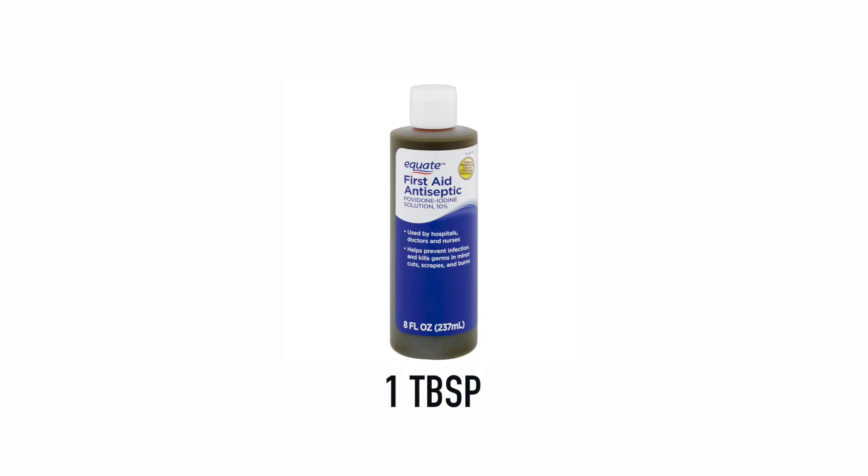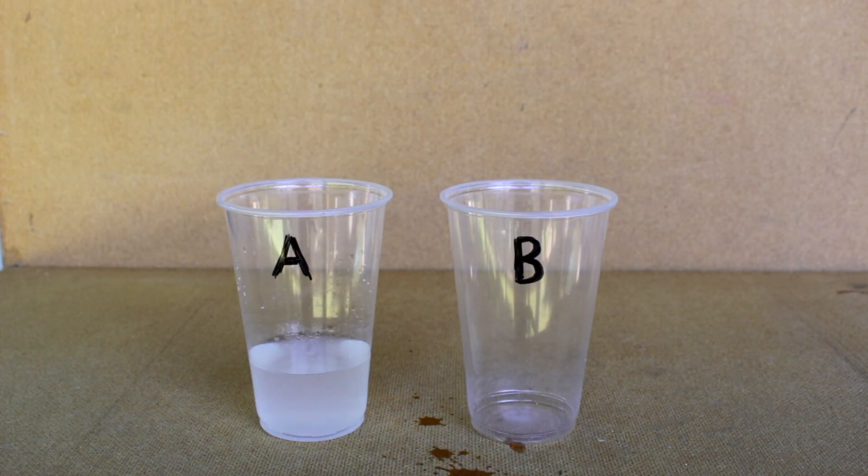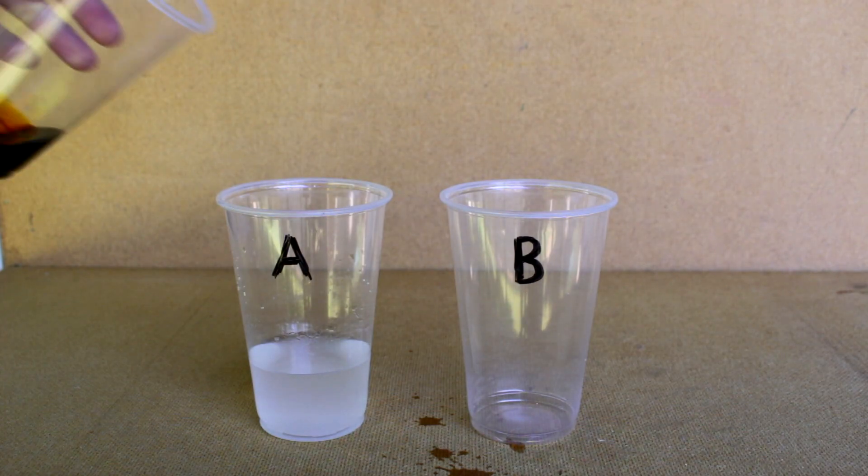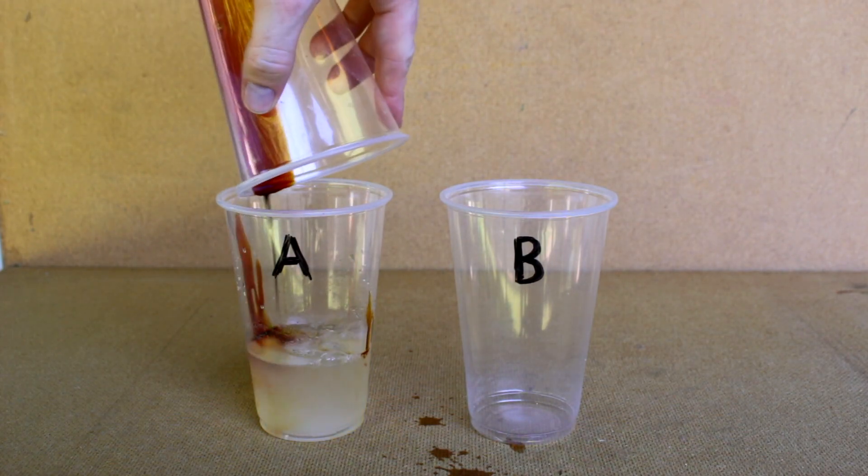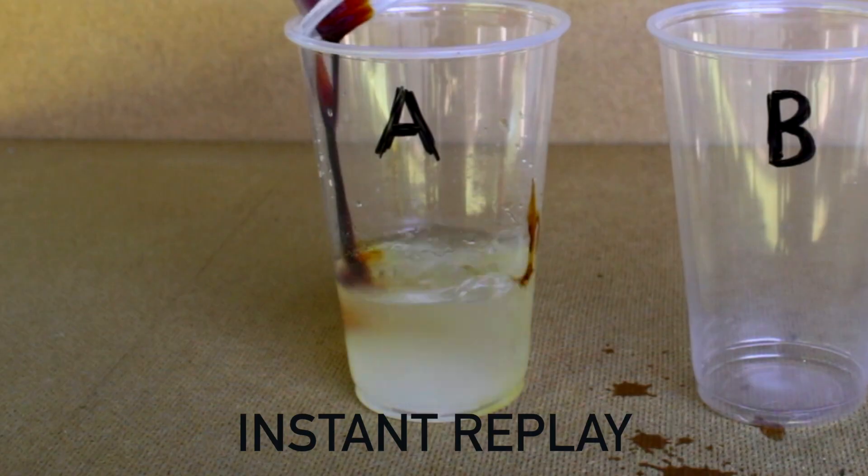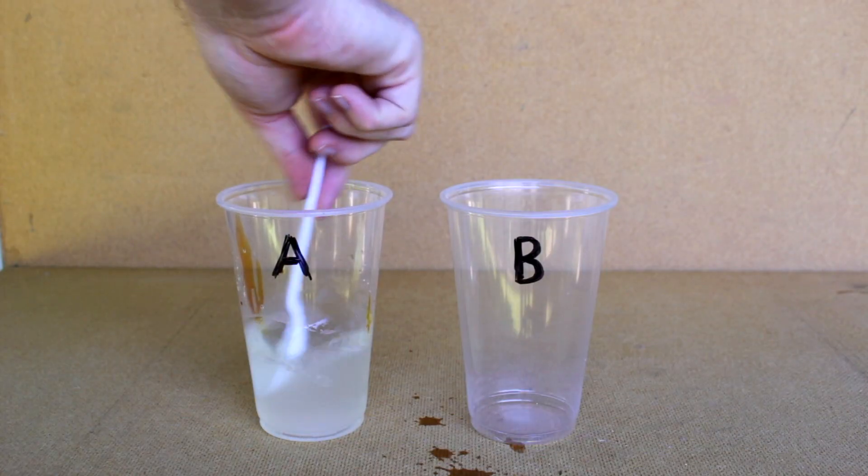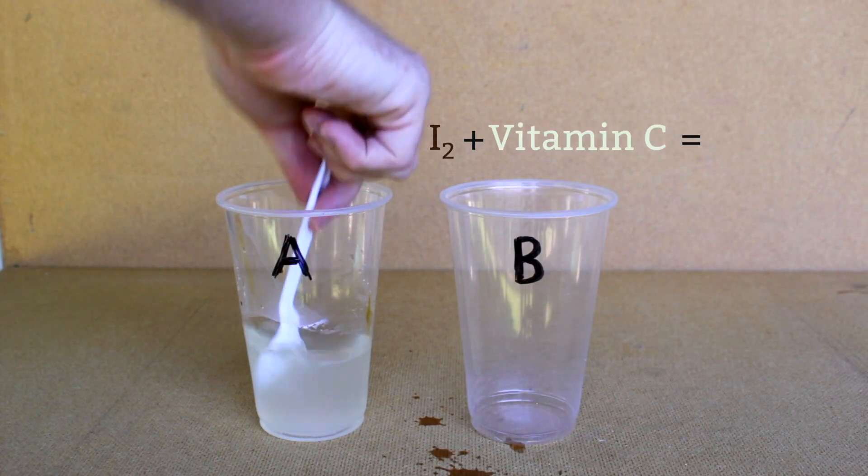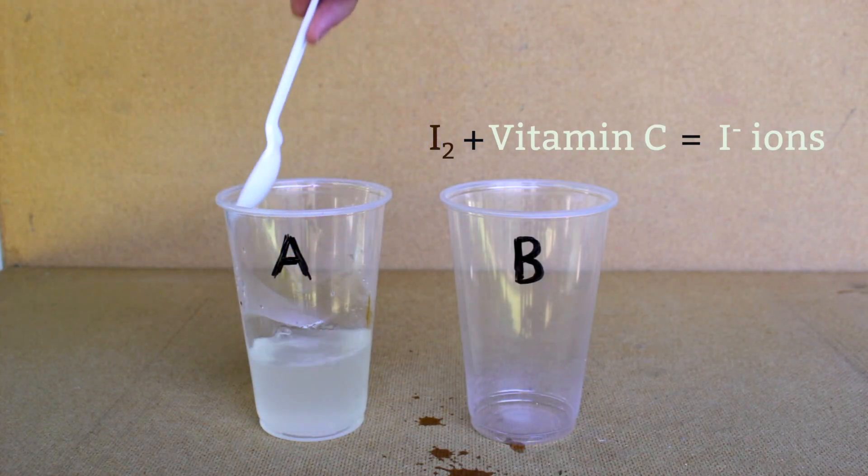Next, add 1 tablespoon iodine, but be careful, it stains. Iodine can be found in the first aid section of most big stores and is brown to begin with, but where'd the color go? Oh right, vitamin C splits iodine molecules into colorless ions, making it clear.